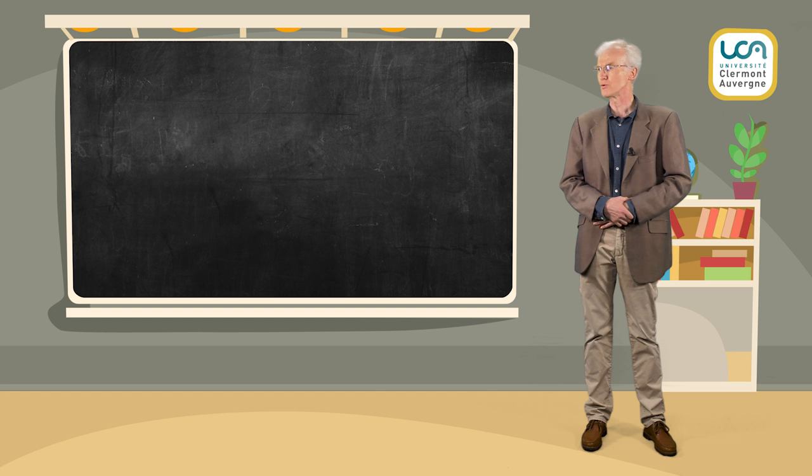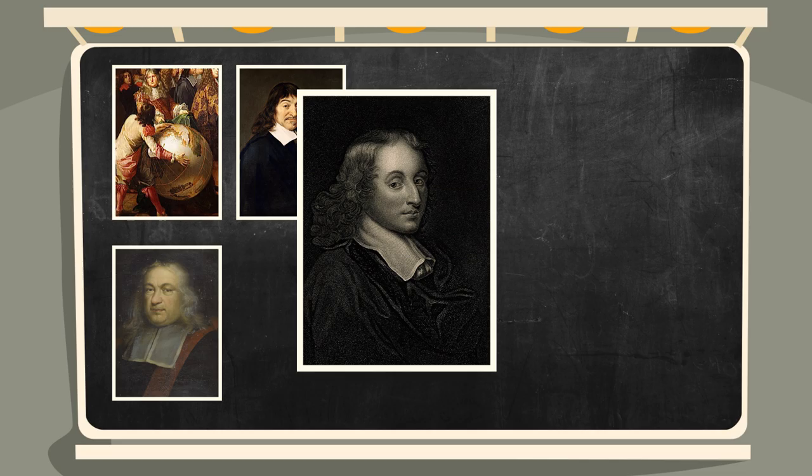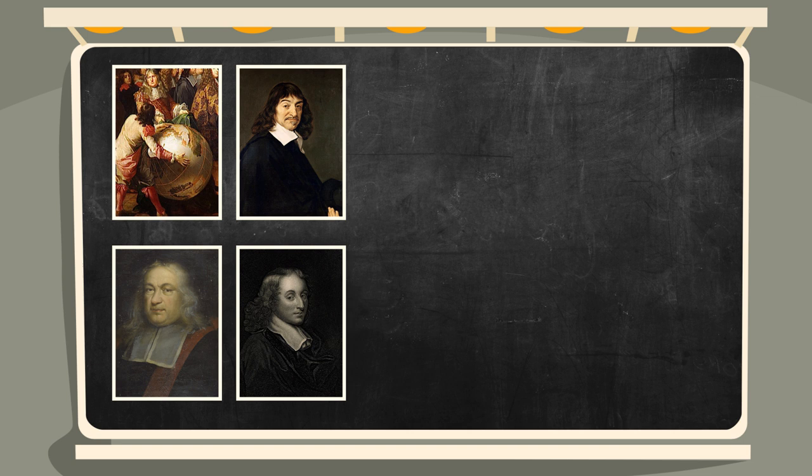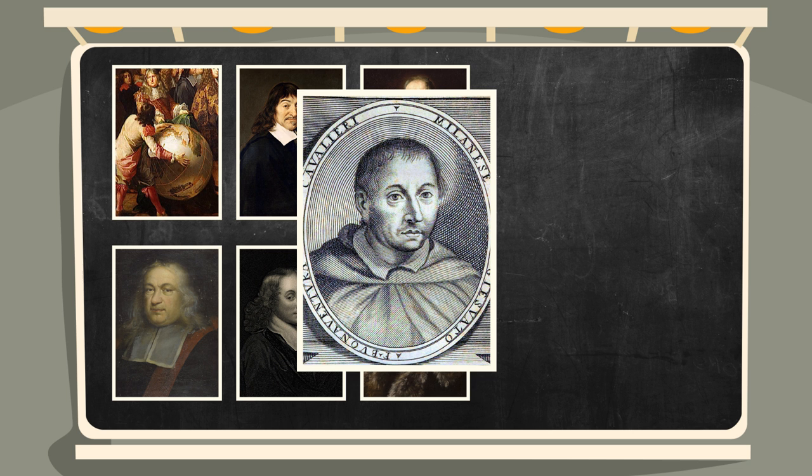Qu'on en juge en France: Roberval, Descartes, Fermat, Pascal, bien sûr, qui a rédigé un traité de la roulette. En Italie: Galilée, Torricelli, qui en 1644 attribue à Galilée la découverte et les premières propriétés de cette cycloïde, Cavalieri et Viviani.